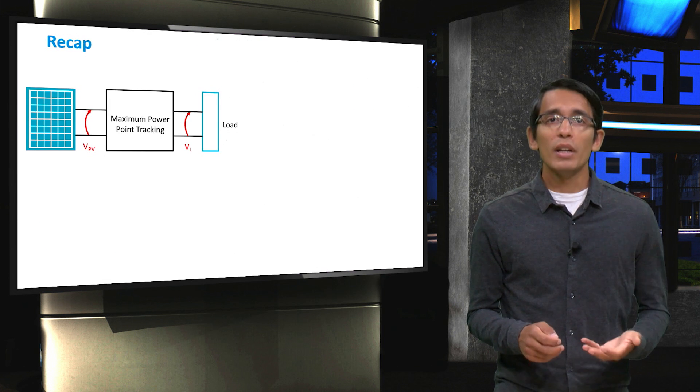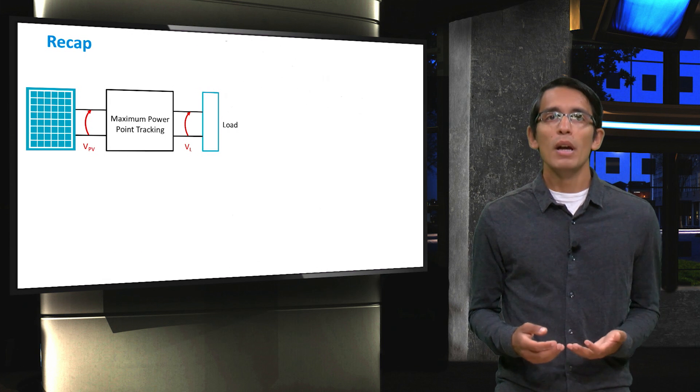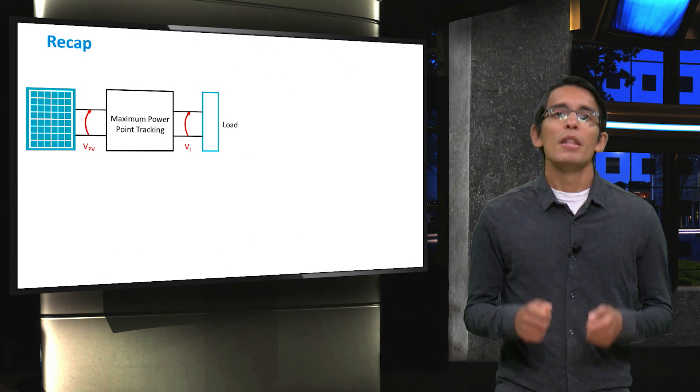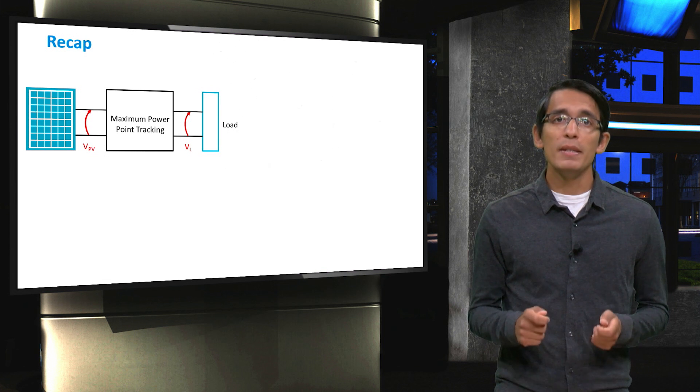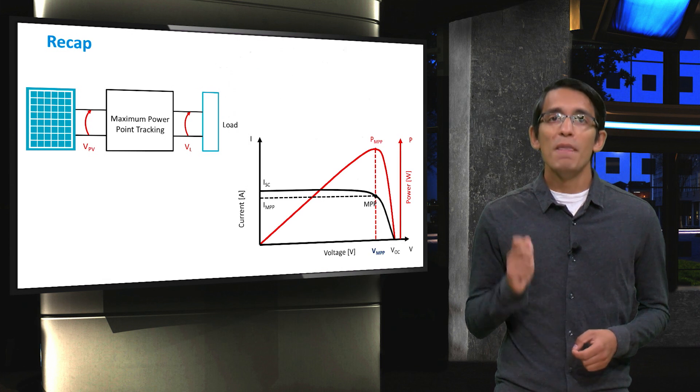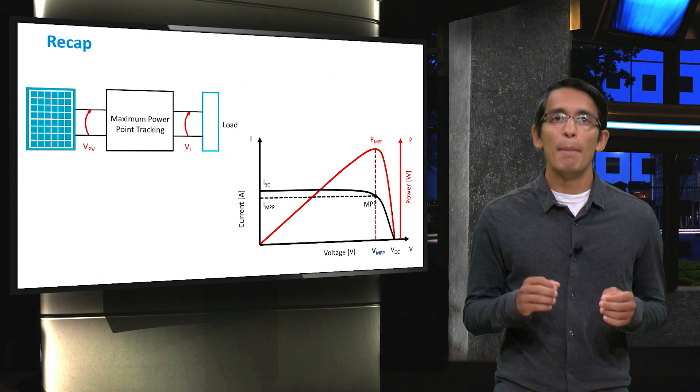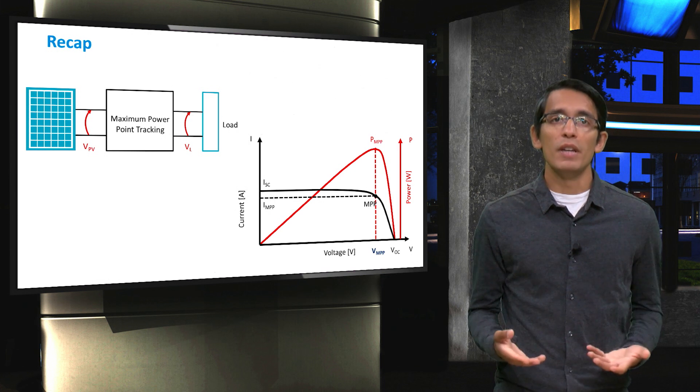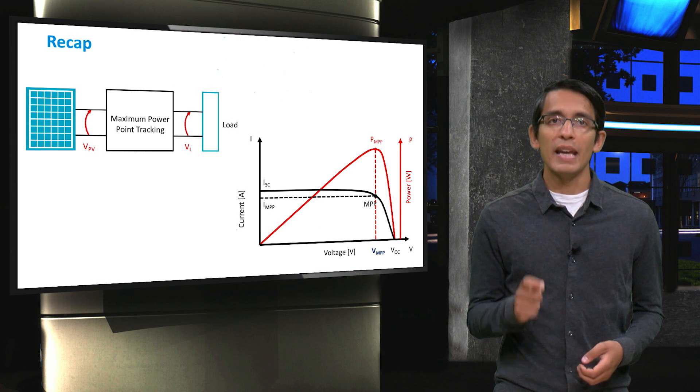So as a concluding comment, I'd like to wrap up this video by making sure that you get the main point regarding maximum power point tracking. The most important aspect of MPPT in a PV system is decoupling the load voltage from the PV voltage. This is necessary so that we can obtain the maximum power from the solar cell by operating it at maximum power point voltages. In the next video, we will look at the different ways to calculate this VMPP value.